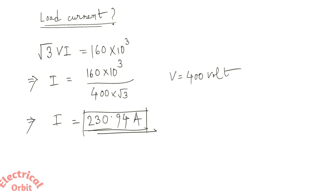The three-phase voltage taken is 400 volts, giving a load current of 230.94 amperes. If you have any doubts regarding these calculations, please mention them in the comment section below.